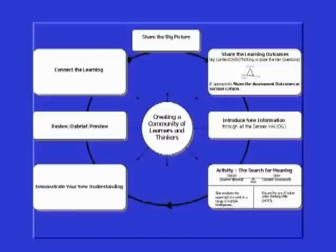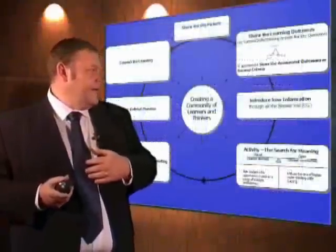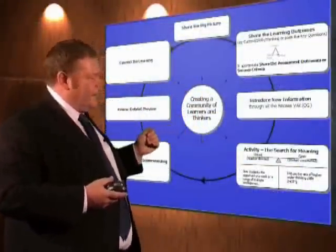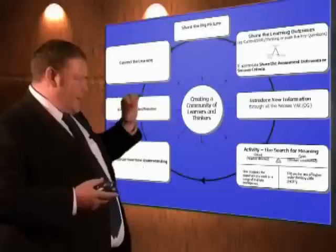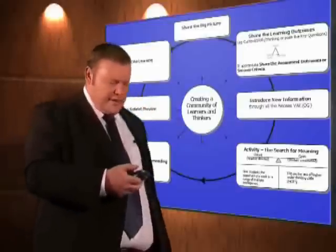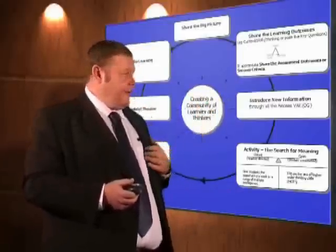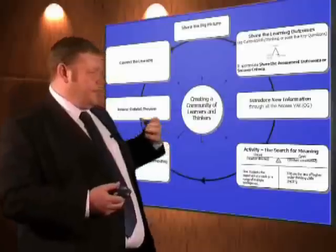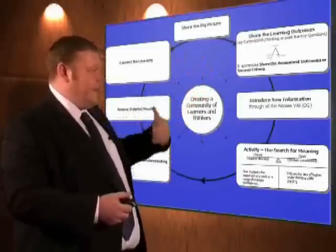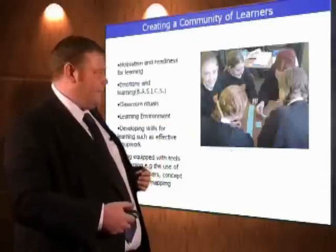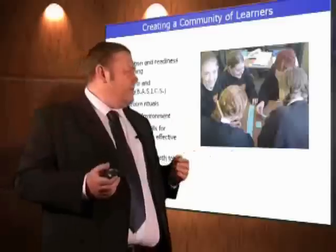Actually reflecting on what have I learnt and how have we learnt it. Let's go through some of these stages in sequence. Creating a community of learners and thinkers — I should really have coloured this one yellow, because in this model it's the sunlight which falls on every stage. It's not the first step; it kind of governs every step. How do we do this? Create a community of learners.